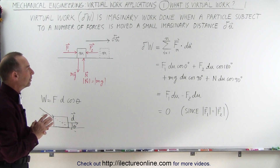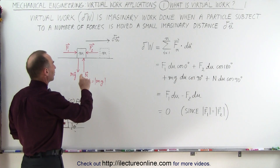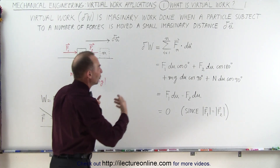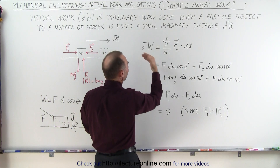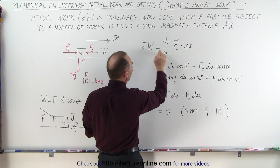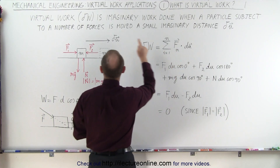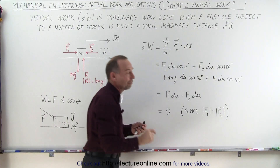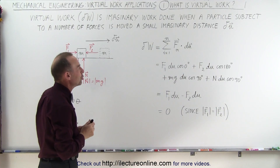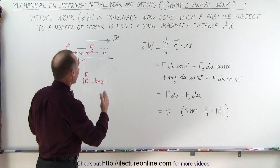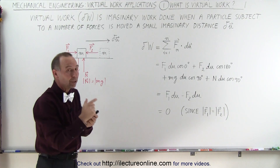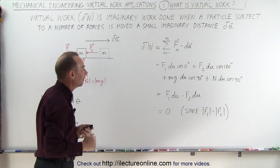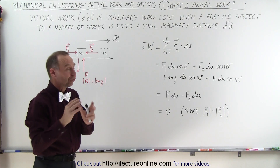So what we're doing here is we're going to add up all the work done by all four forces. The virtual work done by definition is simply equal to the work done by each of the forces acting on the object moving it through an imaginary distance, a very small delta U. In this case we have four forces, so we're going to have four components added to the virtual work done.